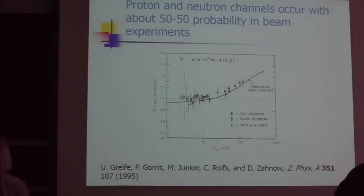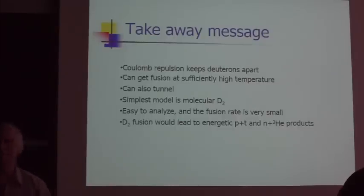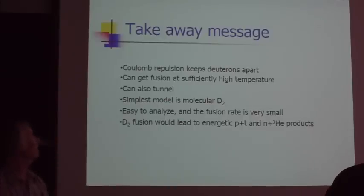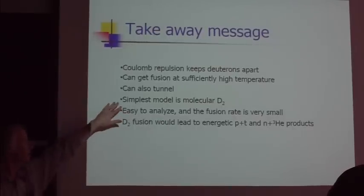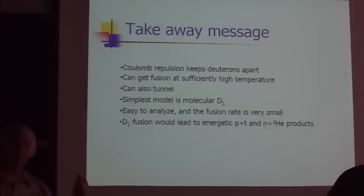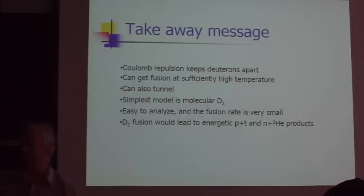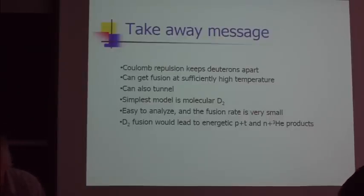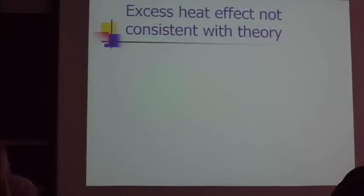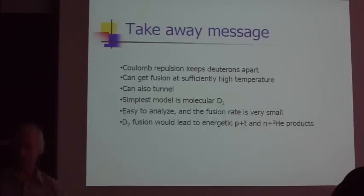There was discussion back in 1989-1990 that some kind of amplification of the Oppenheimer-Phillips effect would lead to modification of the branching ratios, but it doesn't seem very likely. Takeaway message: Coulomb repulsion keeps the deuterons apart. For fusion you need high temperature or tunneling. The simplest example is D2 molecule - you can analyze it, the tunneling is very weak. If you did succeed in tunneling through the barrier, you would get conventional DD fusion reactions, and it would be very easy to tell because you will see the neutrons.